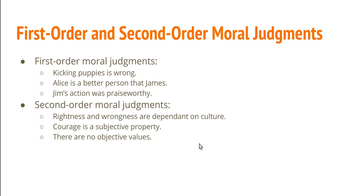Lastly, we have Mackie's thesis that there are no objective values. We can see this as a second order moral judgment being made about every single value property — rightness, wrongness, goodness, badness, and so on. What Mackie is saying is that those properties have the further second order property of being non-objective — in some sense subjective, whether that means they depend for their application on the thoughts and feelings of human beings, societies, or cultures. So Mackie's claim attributes a second order property of non-objectivity to the entire class of first order moral or value properties.